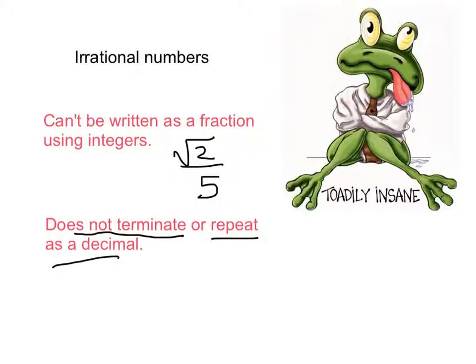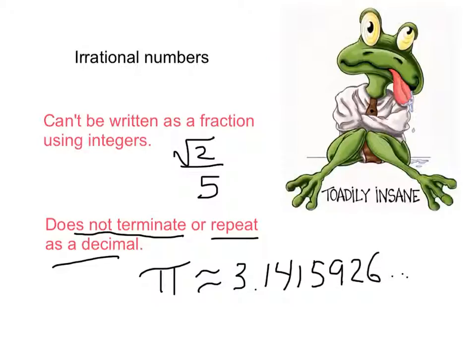Think about that — a decimal that keeps going and going and going without ever stopping, yet it never repeats. A good example of that is the number pi. The number pi is like 3.1415926... it keeps going and going. It never terminates, it never has a zero remainder, and it never repeats itself. So it just keeps going — it's totally an insane number.